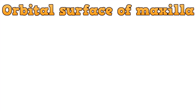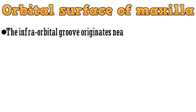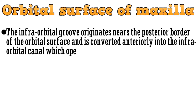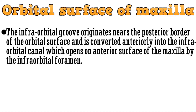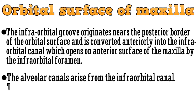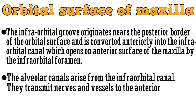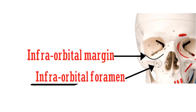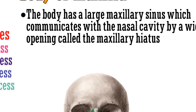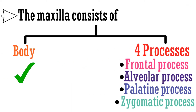The last surface of the body is the orbital surface. The infraorbital groove originates near the posterior border of the orbital surface and is converted anteriorly into the infraorbital canal, which opens on the anterior surface by the infraorbital foramen. The alveolar canals arise from the infraorbital canal and transmit nerves and vessels to the anterior teeth. This is how it looks with the nerve fibers passing through the infraorbital foramen. With this we complete the anatomical features of the body of maxilla.